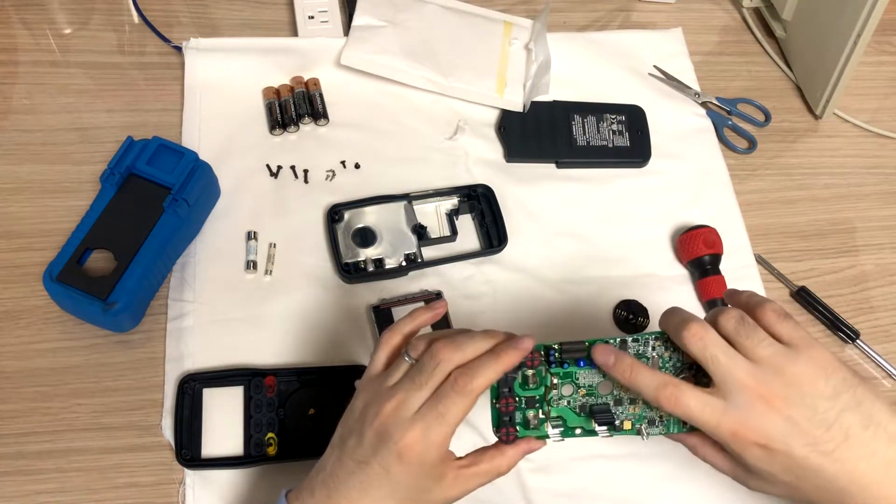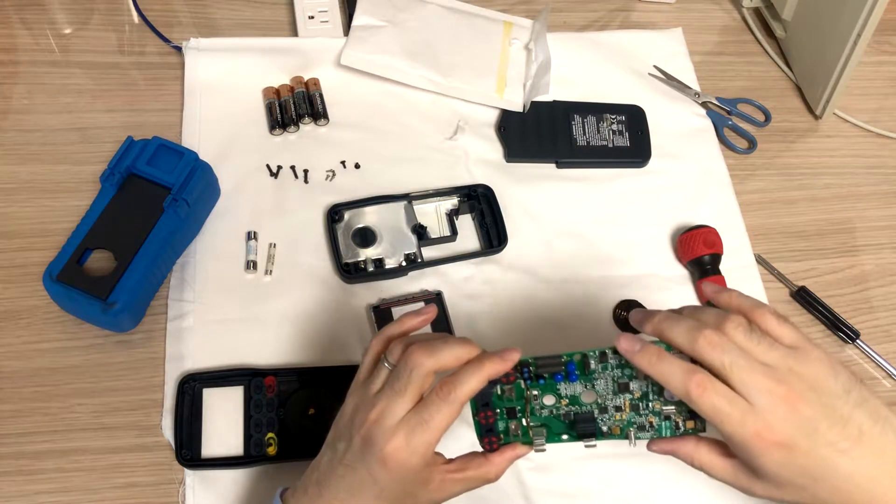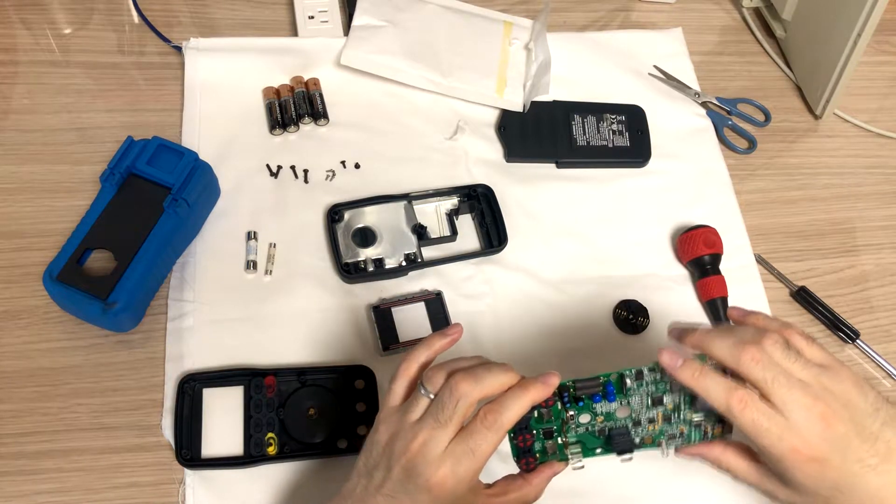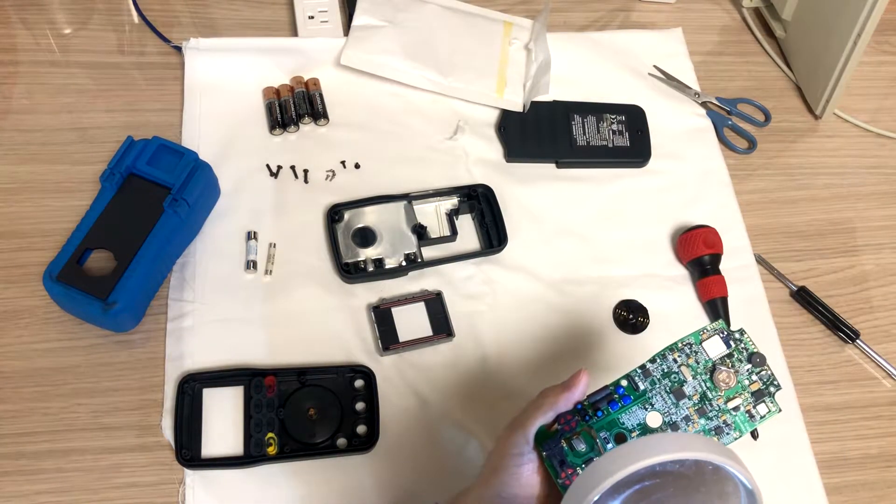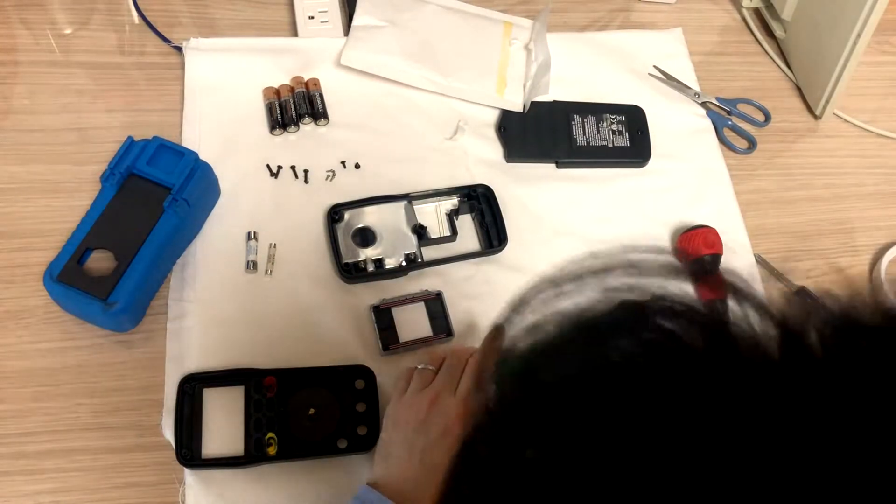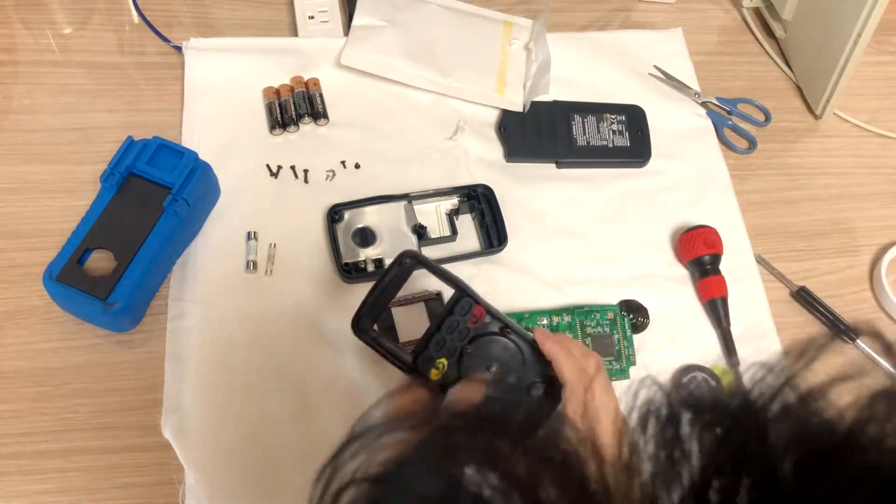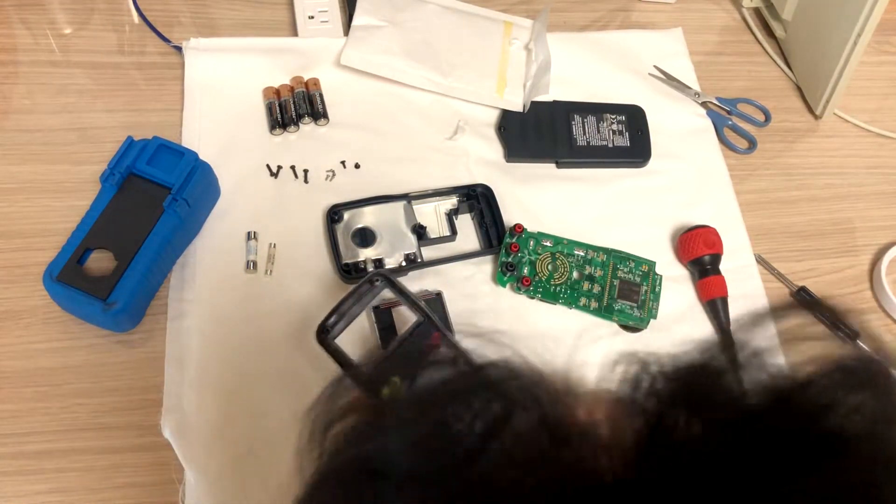So there's three MOVs and four PTCs and protection. This is the protection resistor, yeah I think so. Okay then I need to, I'm going to change this.